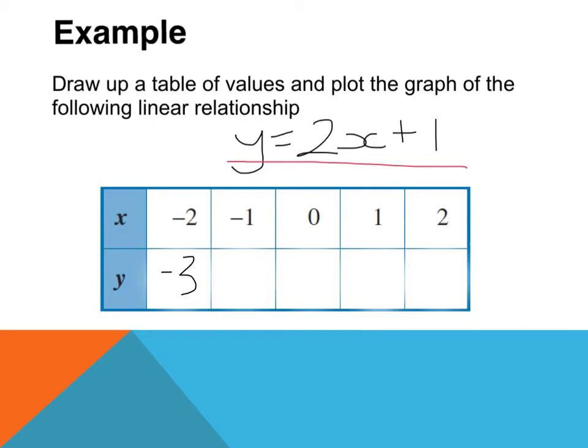Next X coordinate. The rule, or the relationship, tells me what to do. It says Y equals 2X plus 1. So, 2 multiplied by X, which is negative 1. 2 multiplied by negative 1 is negative 2. Add 1 becomes negative 1.